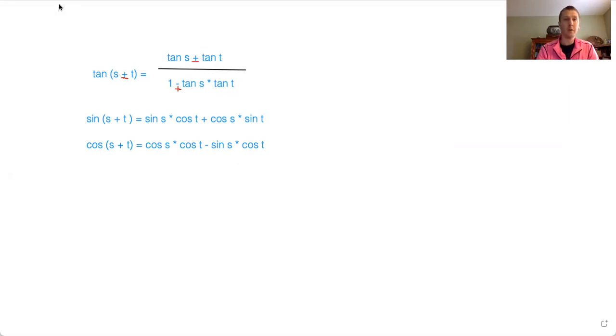Other things to note would be, what if these two angles are the exact same? What if you have sine of two times some angle? Well, then it's sine of s times cosine of s plus cosine of s times sine of s, which means sine of twice an angle is equal to twice the sine of the angle times the cosine of the angle. That's called the double angle identity.